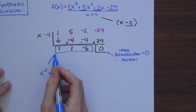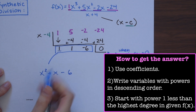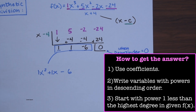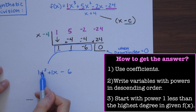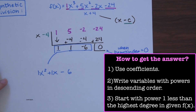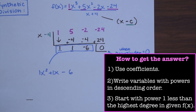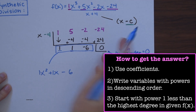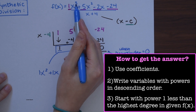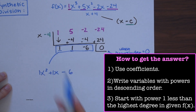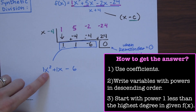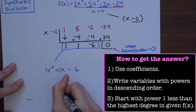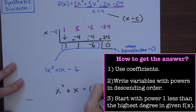Now we identify our answer. From the table we get x² + x − 6. The way this works is by taking the coefficients: here's a 1, here's a 1, and the last coefficient is just the whole number negative 6. The powers go in descending order: x squared, then x to the first power, then no variable. We start at x² because with synthetic division you always start the answer with the power that is one less than the polynomial you started with. So our answer is x² + x − 6.